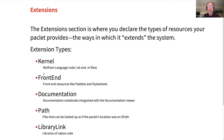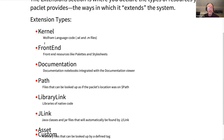The extension section is where you declare the types of resources that your PACLIT provides, the ways it extends the system. These are the currently supported extension types. There's a kernel type, where you put your .m files. There's a front-end extension, where you declare pallets, style sheets, and front-end resources. A documentation extension is where you declare that you provide documentation that integrates into the documentation system. There's a path extension, which lets you do path-based lookups within your PACLIT as relative paths based on the PACLIT name.